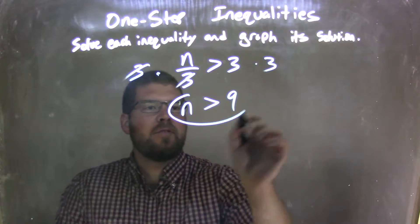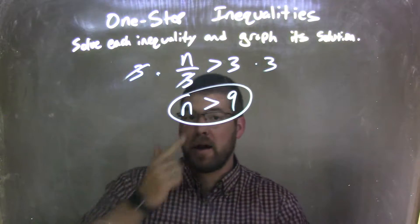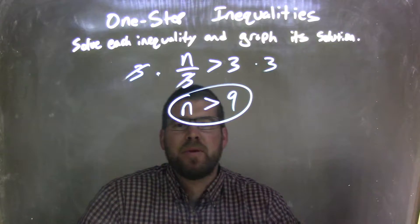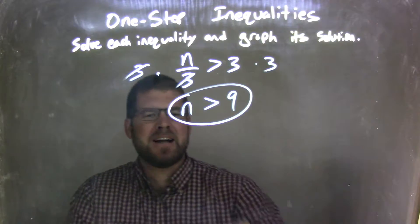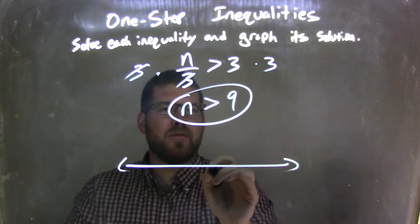n by itself is isolated. Fantastic, that's great. So we have n is greater than 9 right there. But now I need to make a graph that matches this, right? So I make a graph here, start with 9.